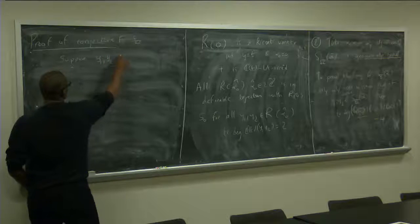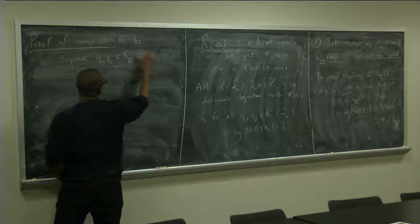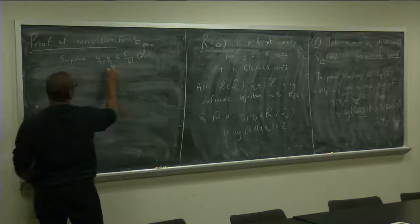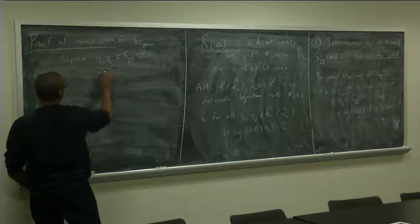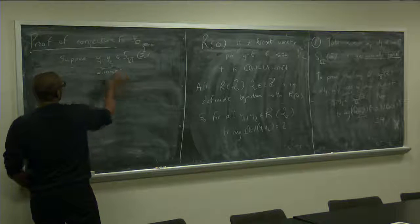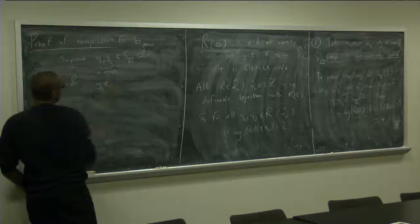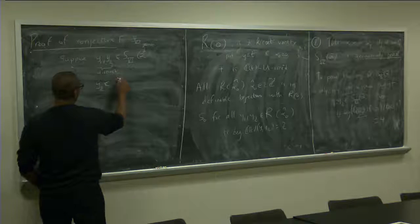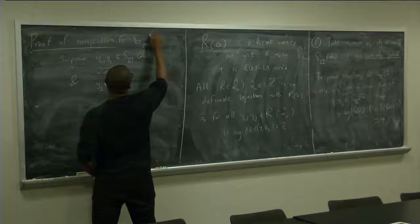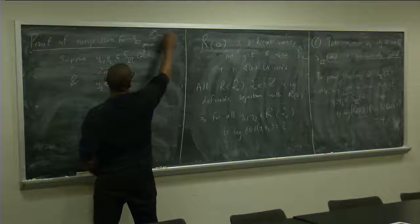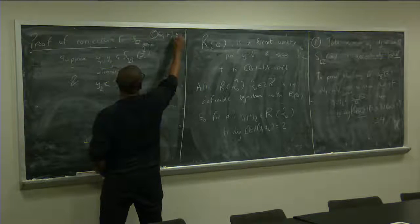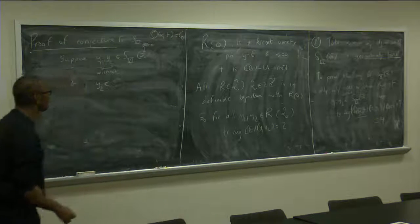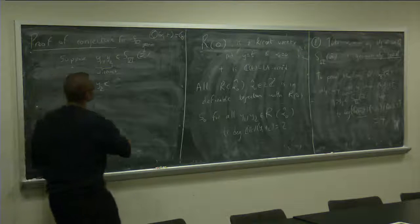suppose Y1, Y2 in S6 alpha. These are generic. These are distinct. And suppose you have that Y2 is in Q. Let me say, let me call Q alpha T for a moment.